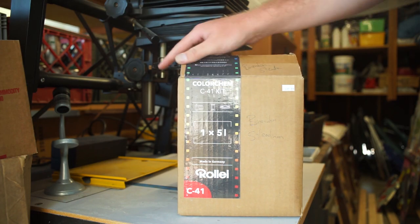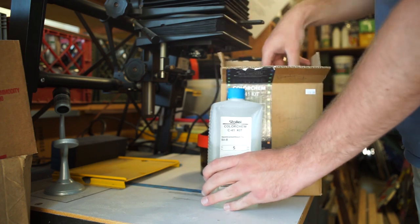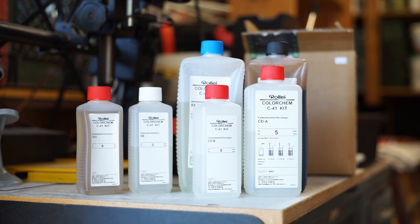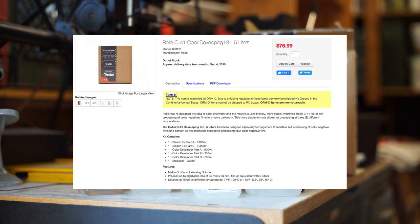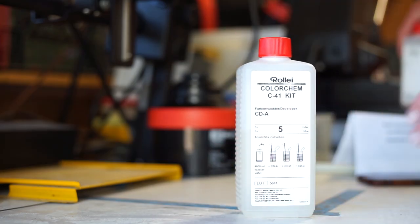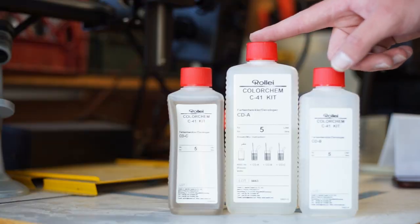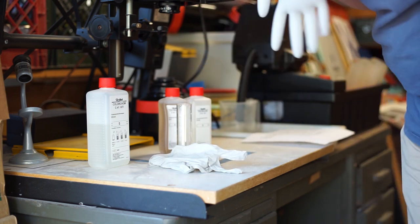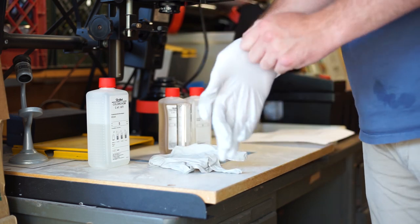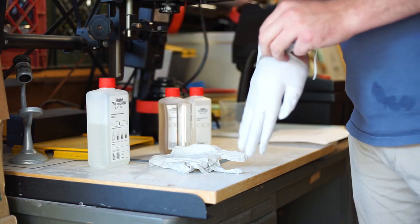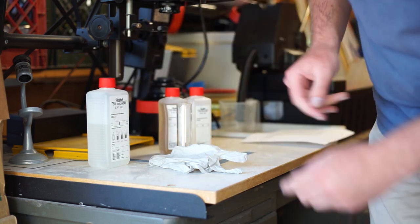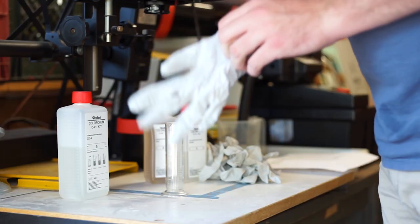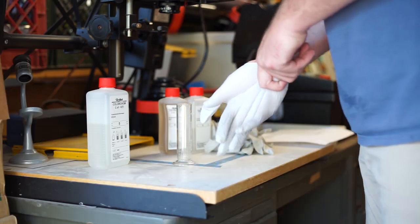Now we're going to make some chemicals. I am using the Rolly color kit, which is a C41 kit which I picked up at Freestyle, and it's about 76 dollars. If you read the instructions on the kit, it comes with three different chemicals for the color developer. Also, wear gloves during all this. The chemicals are pretty hazardous, you don't want to get them on your hands. Of course I made this video right when the coronavirus hit, so I had to pick up some more gloves, but everyone had bought them all up at the store.